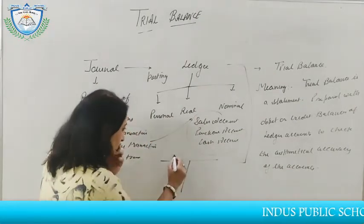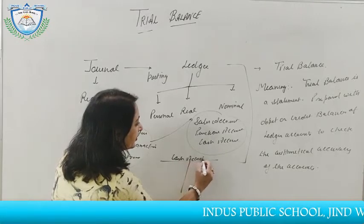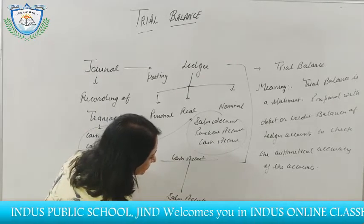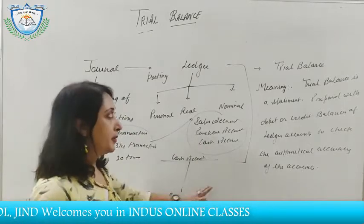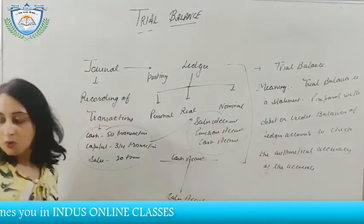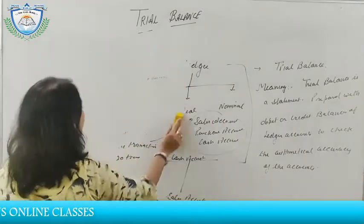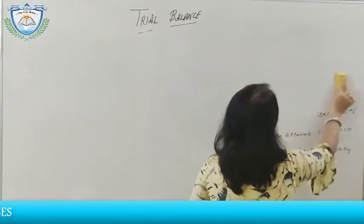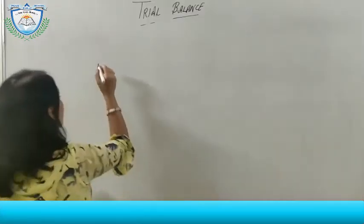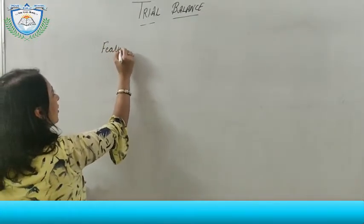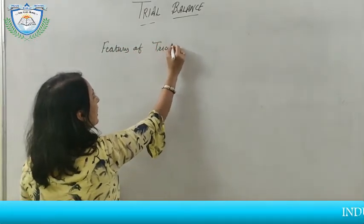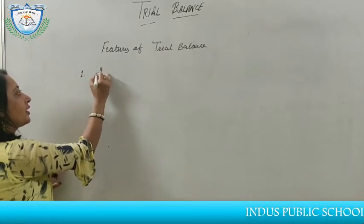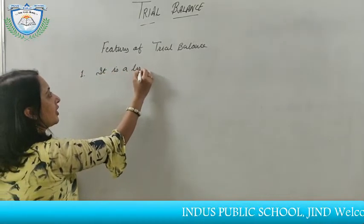We prepare many accounts such as cash account, sales account, and purchase account. We then take the balances of these ledger accounts and prepare the trial balance. Now, what are the features of trial balance?